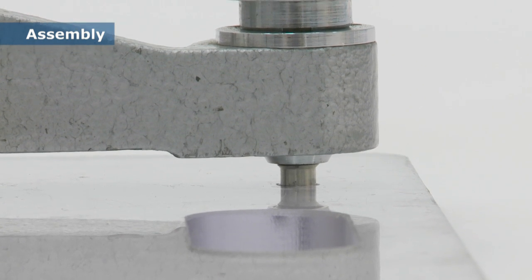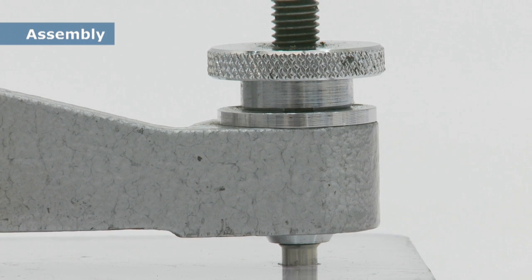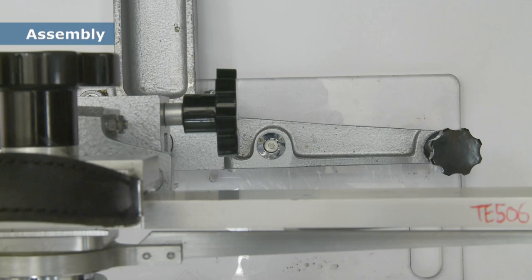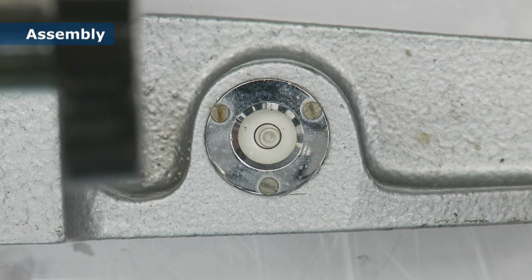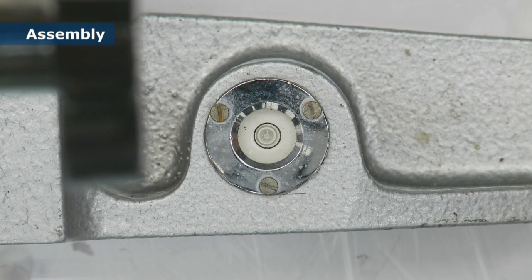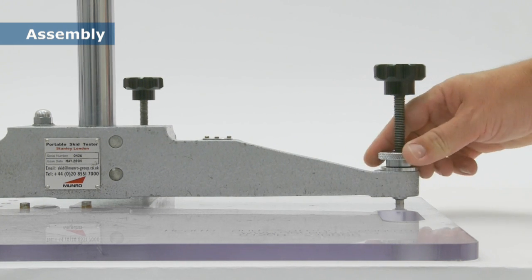The feet should be adjusted so that the pendulum frame is set as low to the floor as possible. The pendulum is then carefully levelled, taking care to avoid parallax error by looking down on the level from directly above. When you're sure it's level, the locking nuts on the feet need to be tightened.